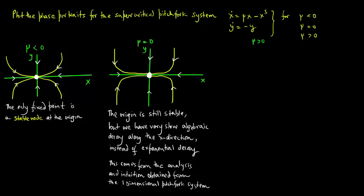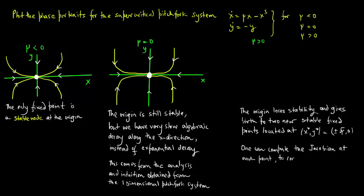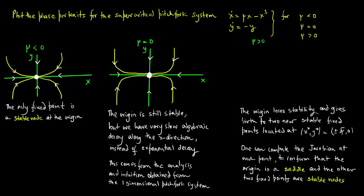Now we look at mu greater than 0. Here the origin loses stability and gives birth to two stable fixed points located at (x-star, y-star) equals (plus or minus square root of mu, 0). One can compute the Jacobian at each point to confirm that the origin is a saddle and the other two fixed points are in fact stable nodes.